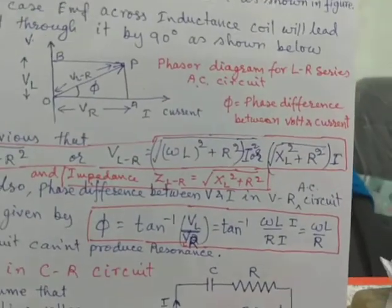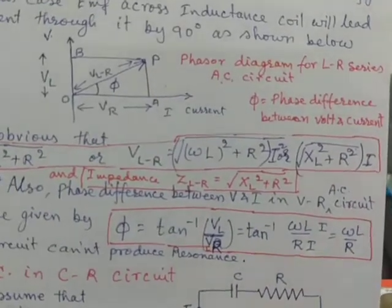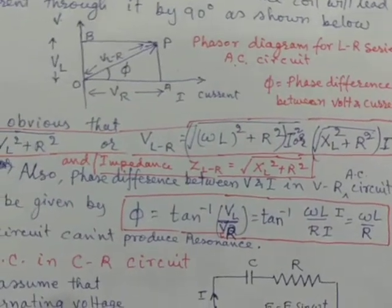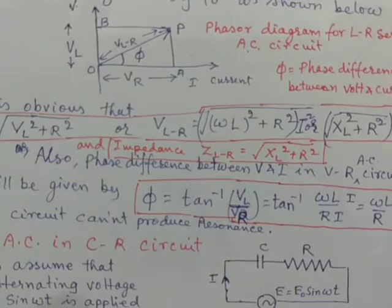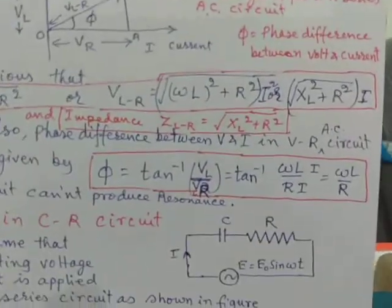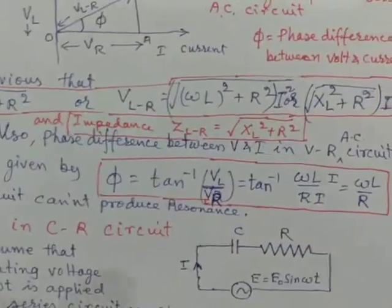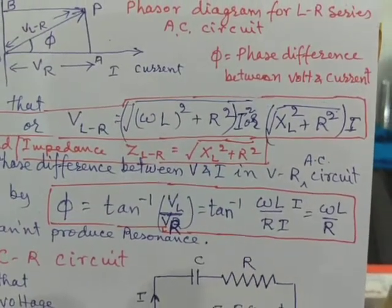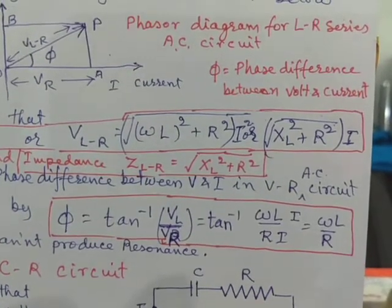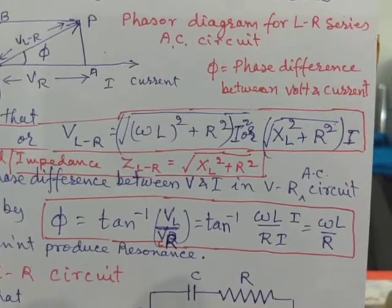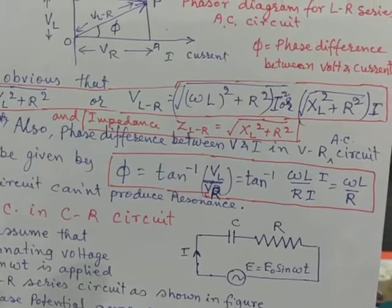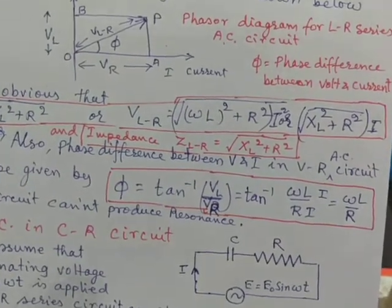And therefore, on putting the value of VL, that is XL into I, and value of VR, that is R into I, we come to this expression: VL equal to square root of XL square plus R square into I. If I is moving out of the square root, it is converting from I square to I. And also, the impedance in this case becomes square root XL square plus R square.